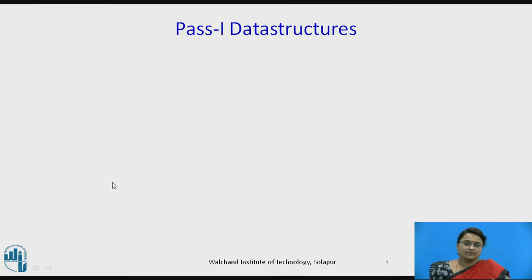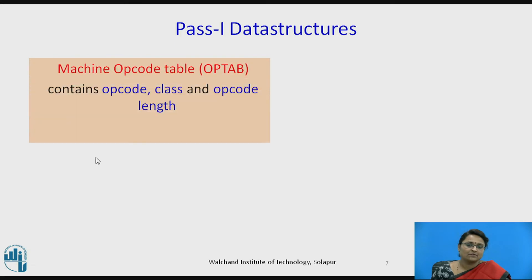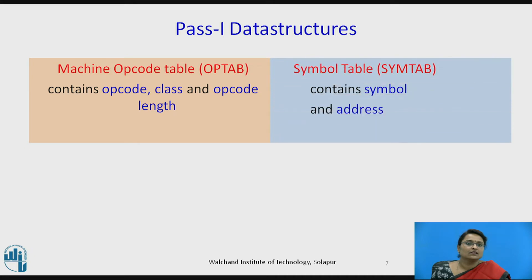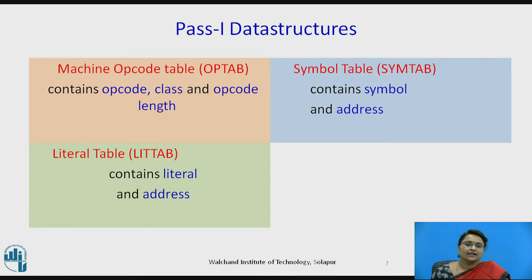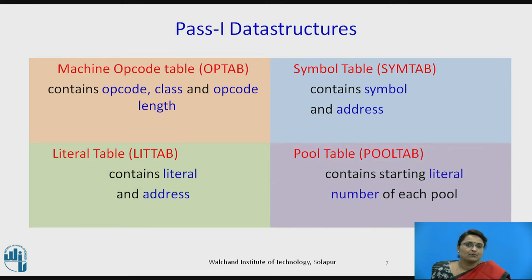Let us see the data structures used for pass one. The machine opcode table contains opcode class and opcode length. The symbol table contains symbols and their addresses. The literal table has literals and addresses, and the pool table holds the pointers of all the pools used for the literal table.